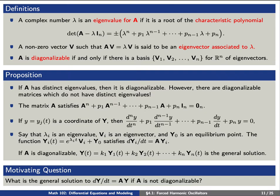We can use some of this to define the concept of eigenvectors and eigenvalues. A complex number lambda is said to be an eigenvalue for A if it is a root of the characteristic polynomial, det(A minus lambda*I_n). A non-zero vector V such that A times V equals lambda times V is said to be an eigenvector associated to lambda. A matrix A is diagonalizable if and only if there exists a basis for R^n consisting of eigenvectors.